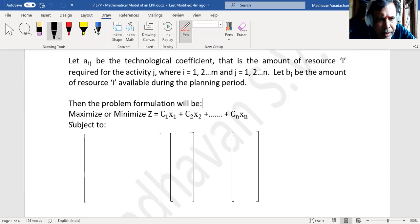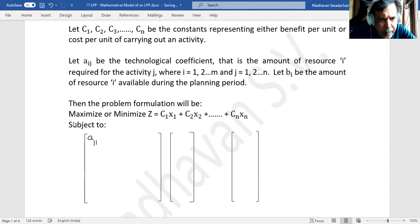It will be like a11 if it is first row first column, a12 for first row second column, and so on to a1n for nth column. Similarly, second row first column, second row second column, and so on. Second row nth column, and so on. Nth row first column, nth row nth column.